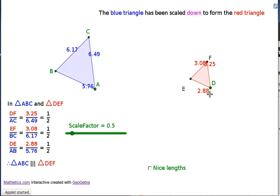And the scale factor is still half, but 6.17 has been scaled down to 3.08, 5.76 has been scaled down to 2.88, and 6.49 has been scaled down according to two decimal places to 3.25.